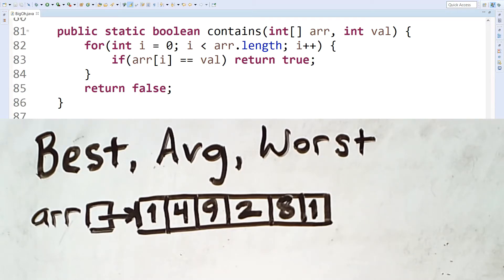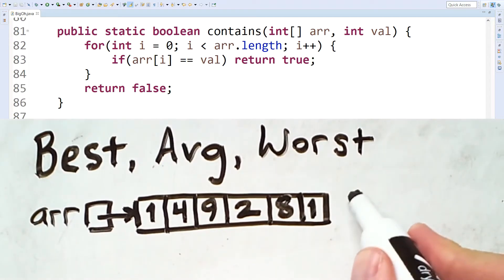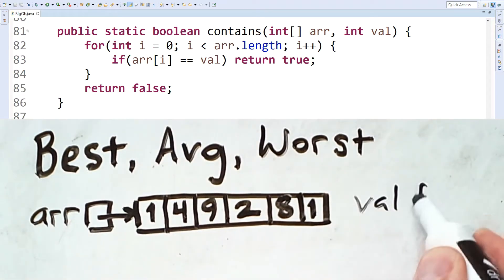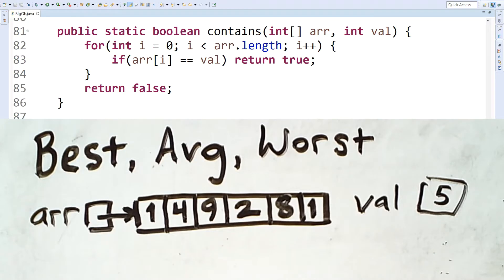Consider the contains method here, which determines whether a given array contains a given value. If we were to use the following array and check for the value 5, then the code will loop through the whole array, checking each value, eventually reach the end of the loop, and then return false.